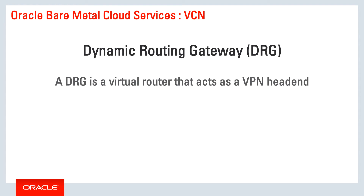A DRG, or Dynamic Routing Gateway, is a virtual router that acts as a VPN head end. Customers can use the DRG to attach their on-premises data center to their virtual cloud network.